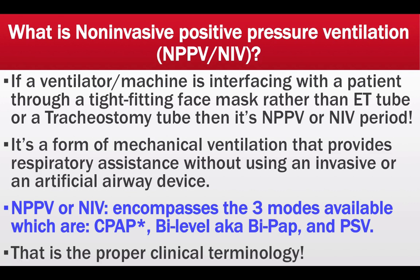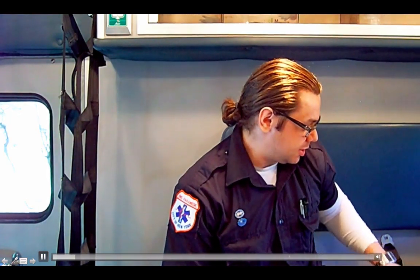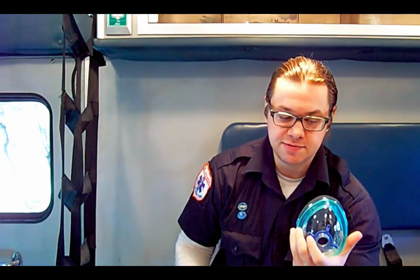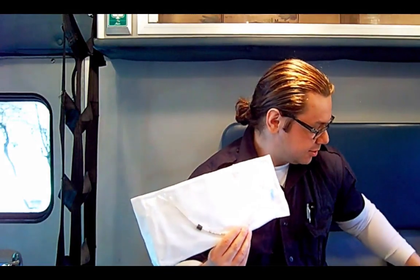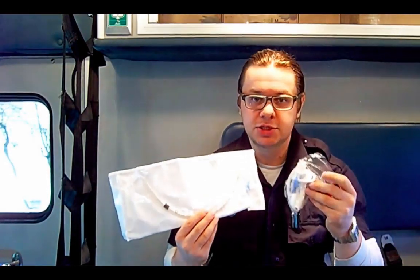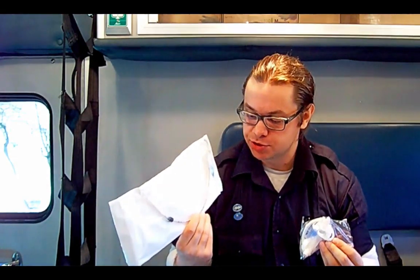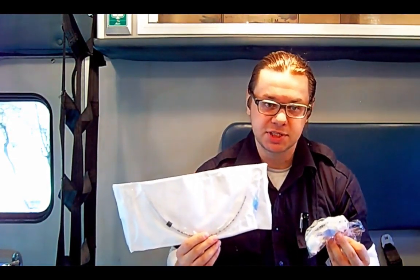Here I have a video presentation showing the difference between invasive versus non-invasive adjuncts. If a patient is getting gas and oxygen through a tight-fitting face mask, this will be non-invasive positive pressure ventilation. If the patient is ventilating through an endotracheal tube or tracheostomy tube, then it's no longer non-invasive because these devices go into the trachea and the patient is being ventilated invasively.